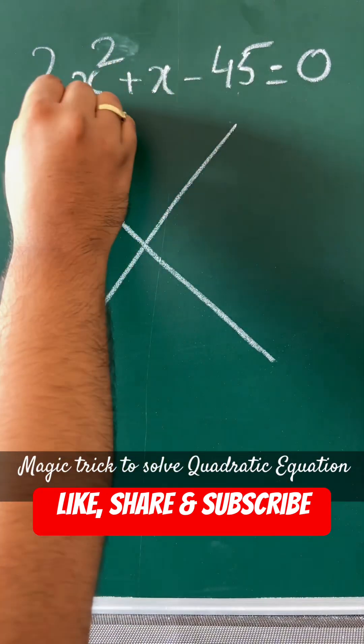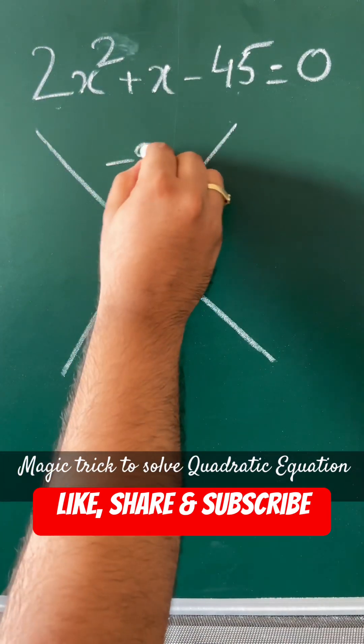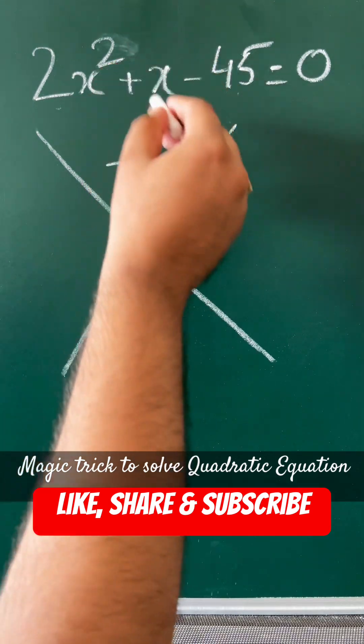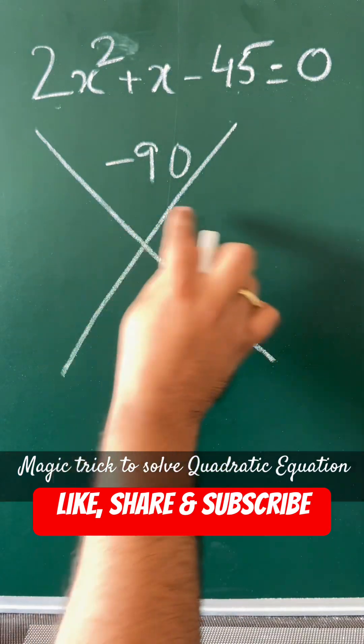Multiply -45 with the coefficient of x², which is 2, to get -90. The middle coefficient, the coefficient of x, is 1. Write it down here. Now think of two numbers.